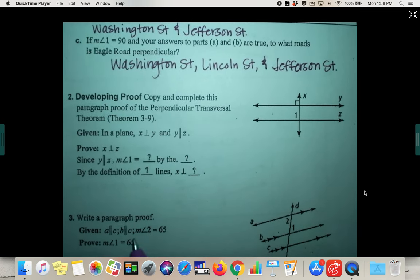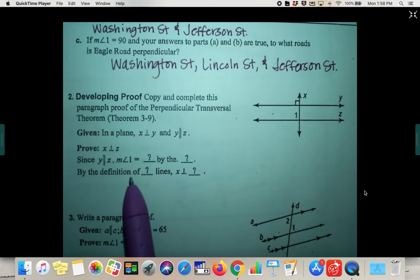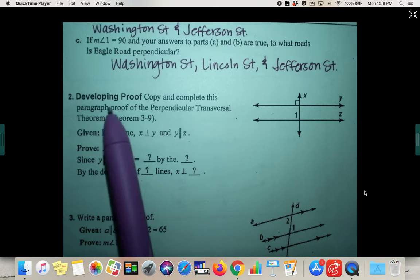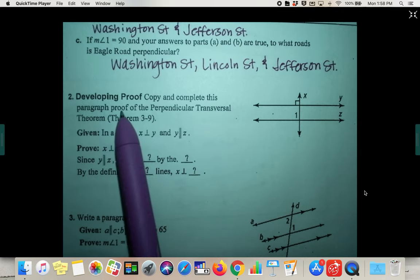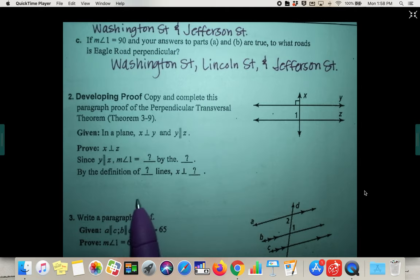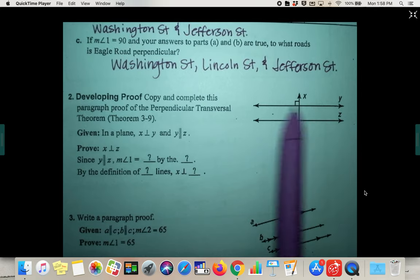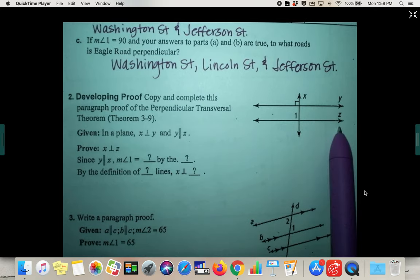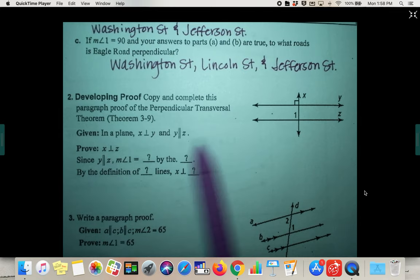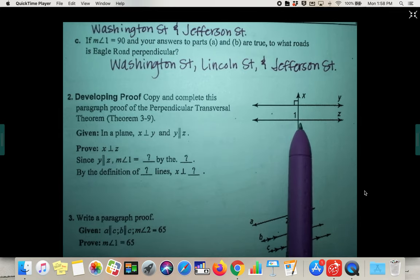Talking about developing a proof, we're not doing a two-column proof yet. We're just going to complete a paragraph proof, and it's just going to be filling in some gaps for now. So it says, in a plane, X is perpendicular to Y, and Y is parallel to Z. Prove that X is perpendicular to Z as well. So this basically just proves our whole theorem.